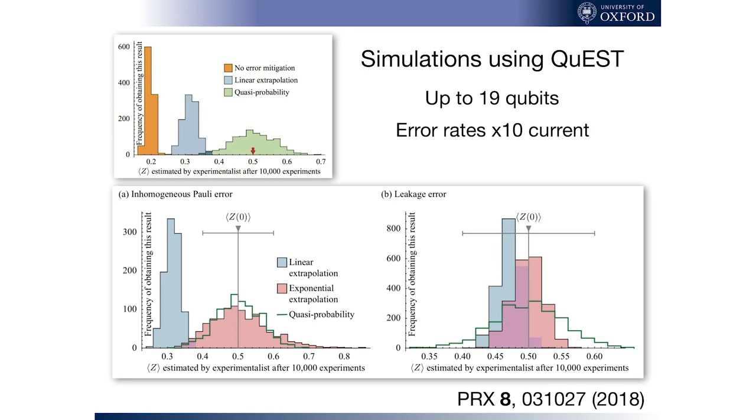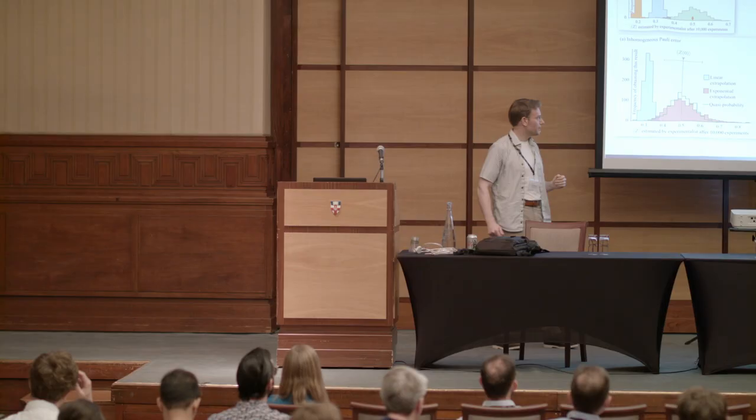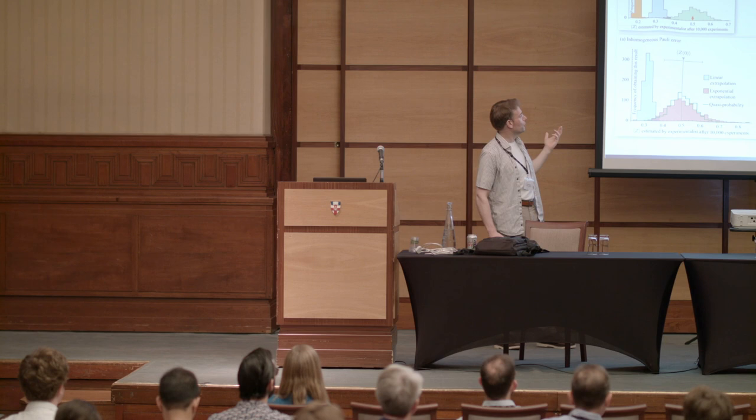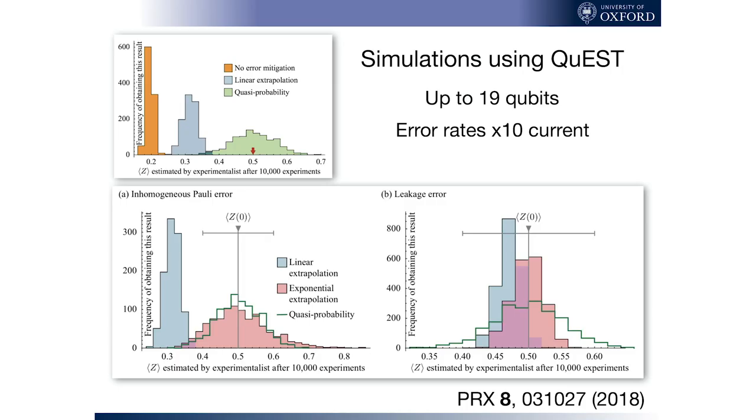So with our emulators, we can go to up to 40 qubits, perhaps. Here we're looking at 19 qubits. And it works very nicely. This data shows what the experimentalist will believe is the expected value of our parameter, as it might be one of these gradients that we're chasing, after having run their apparatus 10,000 times. So the real answer, by the way, is 0.5, where that little red arrow is.